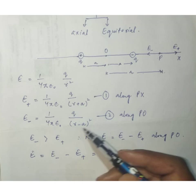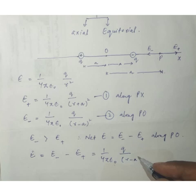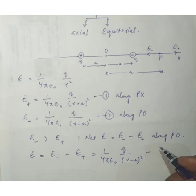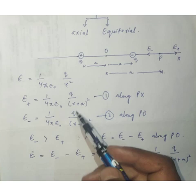Substituting values from equations one and two: E = (1/4πε₀) × q/(r − a)² − (1/4πε₀) × q/(r + a)². Here I have used magnitude q for both charges since I am only finding the magnitude of the electric field, not treating it as a vector with −q.